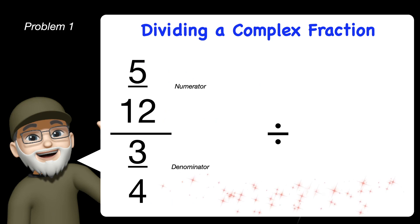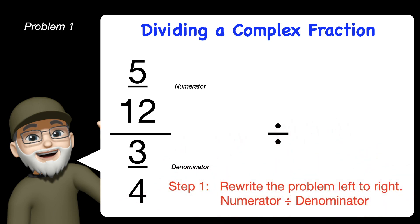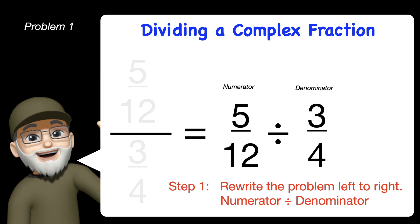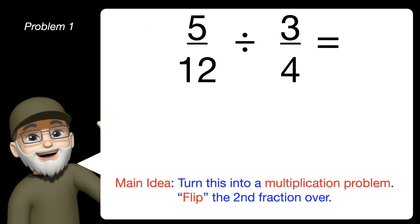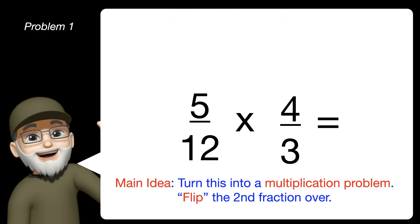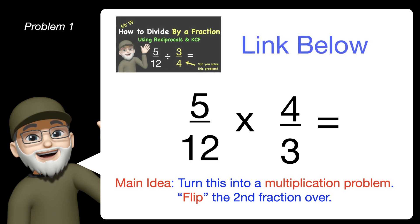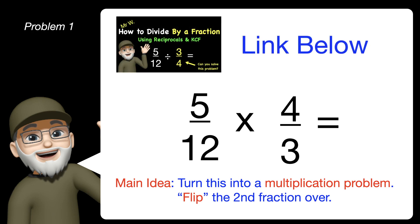Our first step is to rewrite the problem from left to right, dividing the numerator by the denominator. After that, the main idea is that we want to turn this division problem into a multiplication problem, then take the second fraction and flip it into its reciprocal. We then multiply the first fraction. If you're rusty on that skill, there's a lesson on how to divide by a fraction that I'll link below.